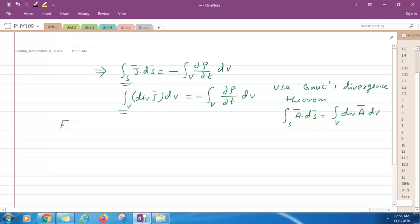Now for an arbitrary volume, we have this equation. Let's compare both sides. That is, divergence J is equal to minus curly rho by curly t.